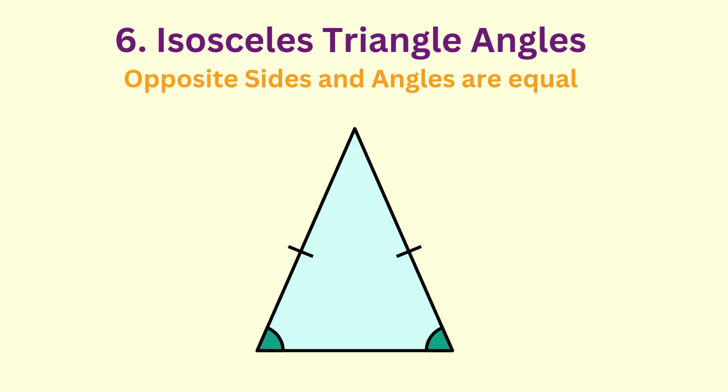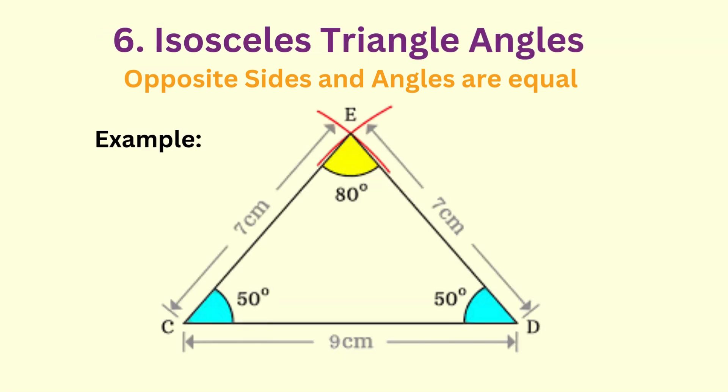An isosceles triangle is a triangle that has two equal sides. Also, the two angles opposite the two equal sides are equal.